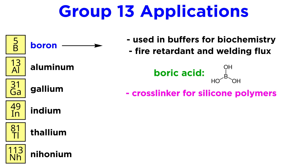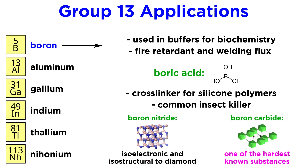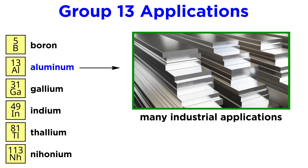Boric acid is used as a crosslinker for silicone polymers and is a common insect killer. Boron nitride is isoelectronic and isostructural to diamond, so it is as hard as diamond, but less expensive and more heat-resistant. And boron carbide is one of the hardest known substances — in fact, secret agents used to put this into automobile oil in order to destroy engines by abrasion.